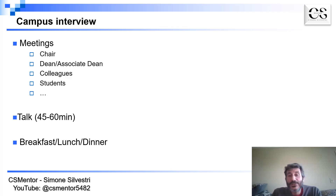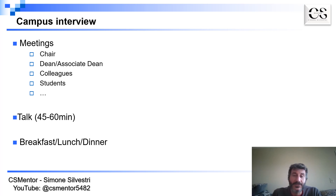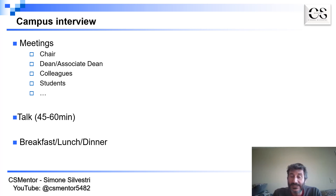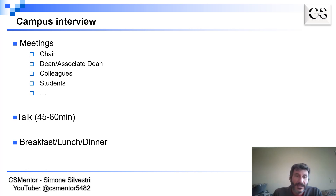Now assume that you have passed the phone interview and you've made it to the campus interview. The search committee contacts you and invites you for a campus visit. The campus interview is generally structured as a bunch of meetings where you're going to meet the chair, the dean and associate dean, other faculty, and students. There's also going to be a talk of about 45 to 60 minutes, and some of these meetings will be over breakfast, lunch, and dinner as well.